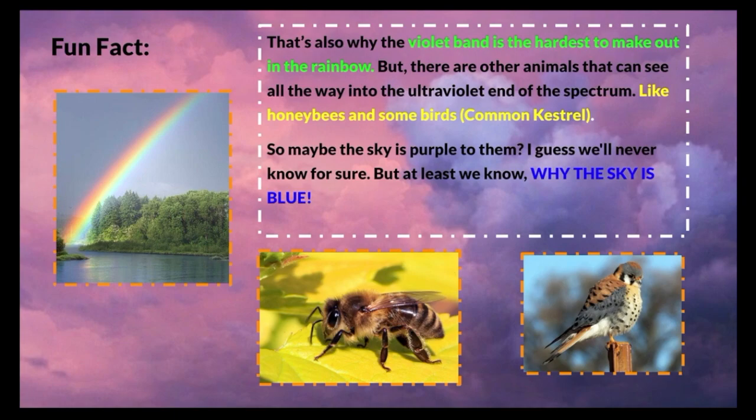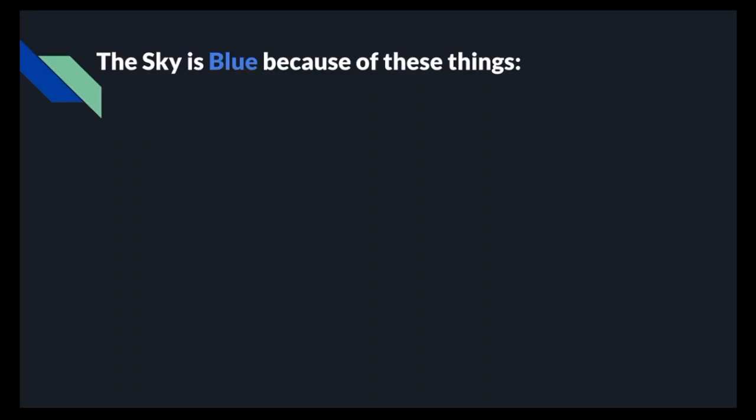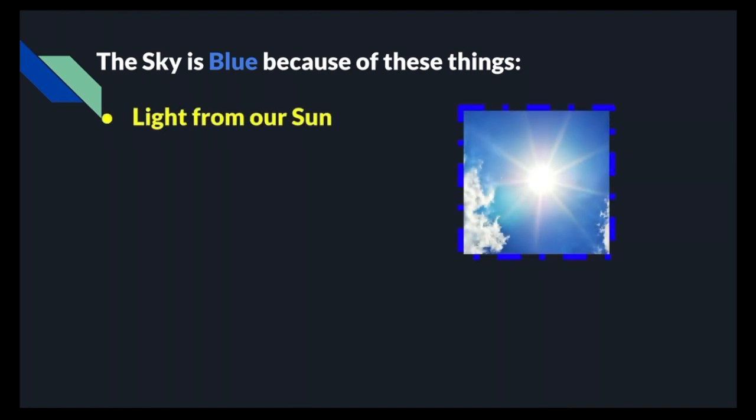Now, let's conclude this video. Let's have a summary of what we have learned today. We have learned three main things which all lead to the sky's blueness. Firstly, we have learned about the light from our sun, which is the wavelengths from the sun itself, and when they enter the Earth's atmosphere, they get scattered around in all directions.